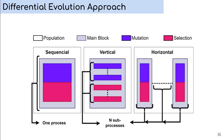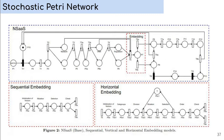Another contribution is the stochastic P3 network to model all NSaaS components and the sequential vertical and horizontal versions. This model can be used to validate new experiments without the complete execution of the embedded algorithm. In this slide, there is a description of all transitions. For the sake of time, we will not explain all of them.